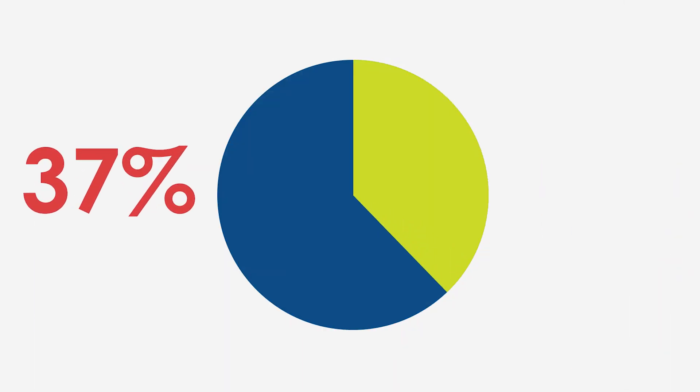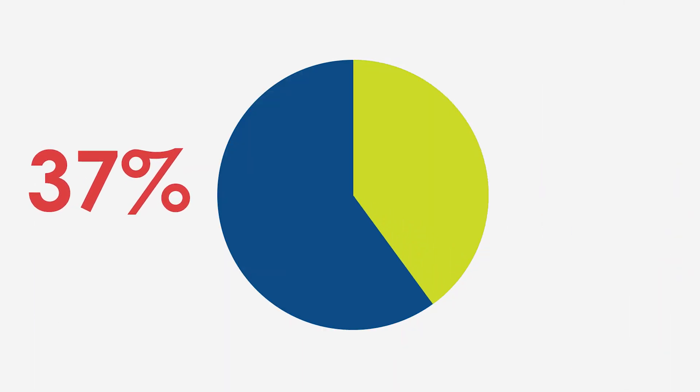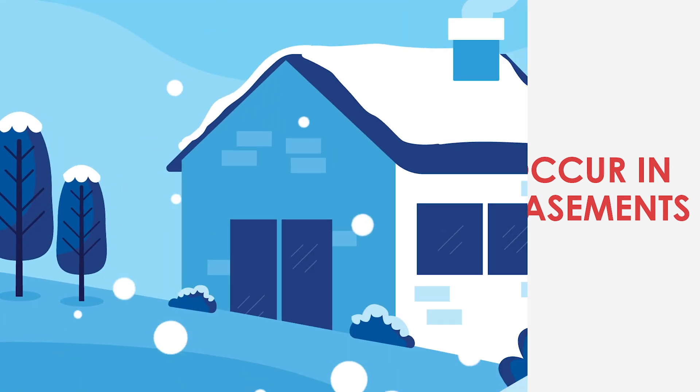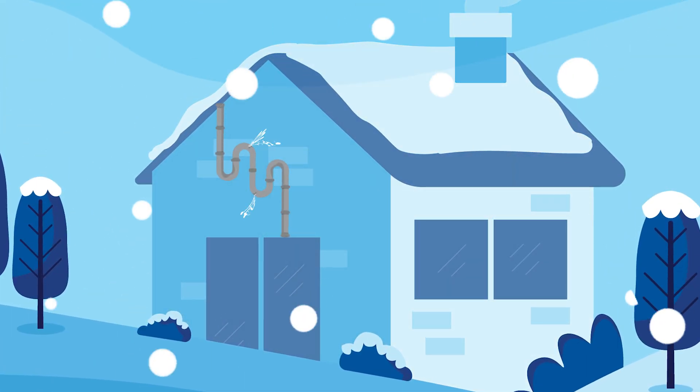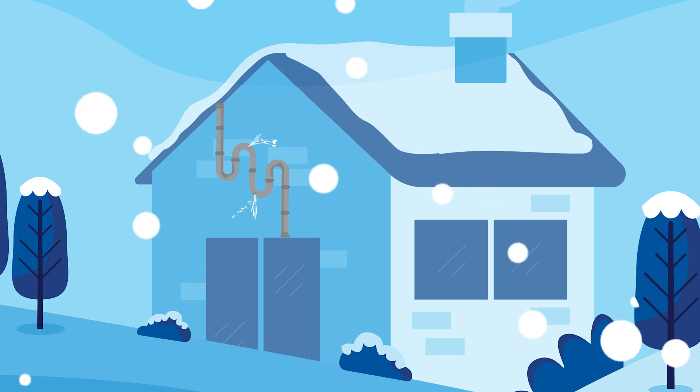In fact, up to 37% of all frozen pipe failures occur in basements. Even pipe systems that thread through cabinets or exterior walls can freeze under the right conditions.